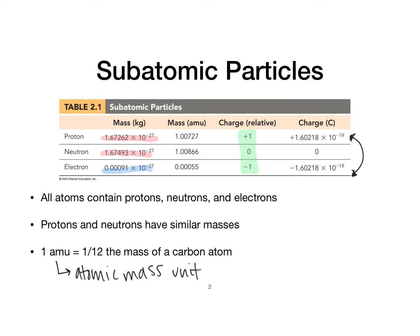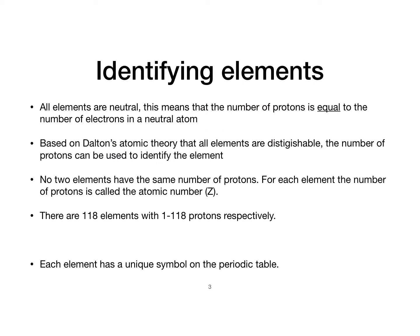These are the subatomic particles you find inside an atom. There are other sub-subatomic particles, but for the purposes of these videos we're going to stick to these three. So the question is: how can we identify an atom? All elements are naturally neutral — they have no charge — which means the number of protons equals the number of electrons. The number of protons can be used to identify the element, and this is known as the atomic number, Z.